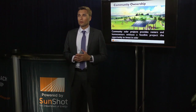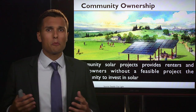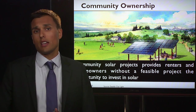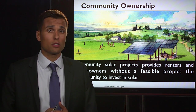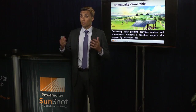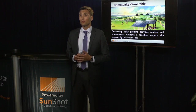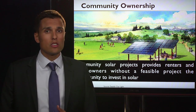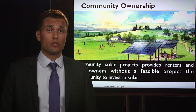The third and final ownership structure is community ownership. Many customers — particularly on the residential and commercial side — may not be able to install solar on-site, either because they're renting and don't have access to the roof or surrounding ground, or because their roof isn't feasible for solar due to structural or shading issues. There's a huge part of the country that can't adopt solar even if they wanted to, and the community ownership structure helps to solve this issue.